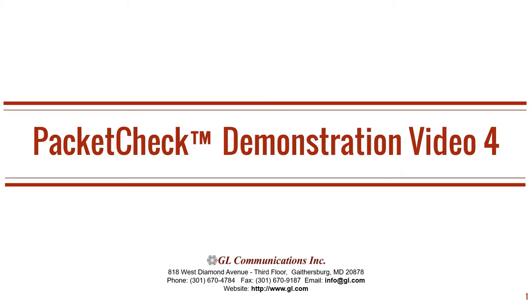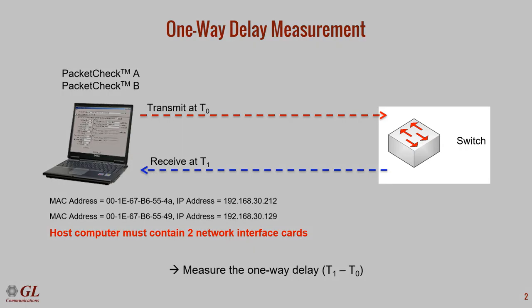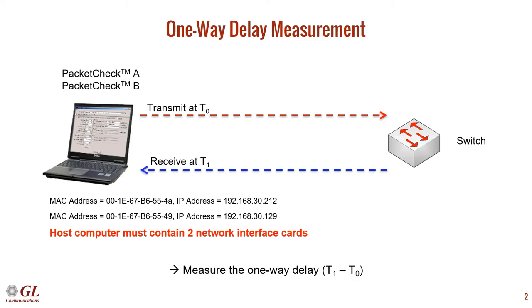This video is a continuation of our PacketCheck series. PacketCheck is our easy-to-use software program for Ethernet and IP testing. We will now demonstrate how to measure one-way delay. PacketCheck measures one-way delay by running two instances of PacketCheck on the same computer. The computer must contain two separate network interface cards. Both Ethernet ports are connected to the device under test, which in this case is a switch. Let's call these PacketCheckA and PacketCheckB.